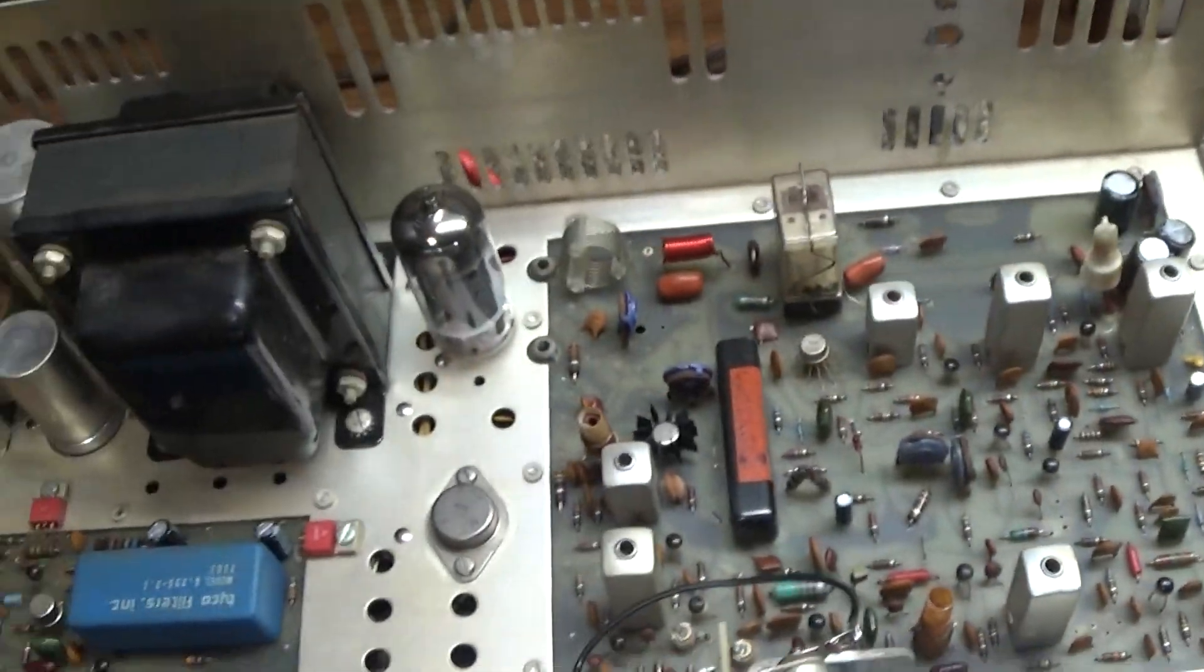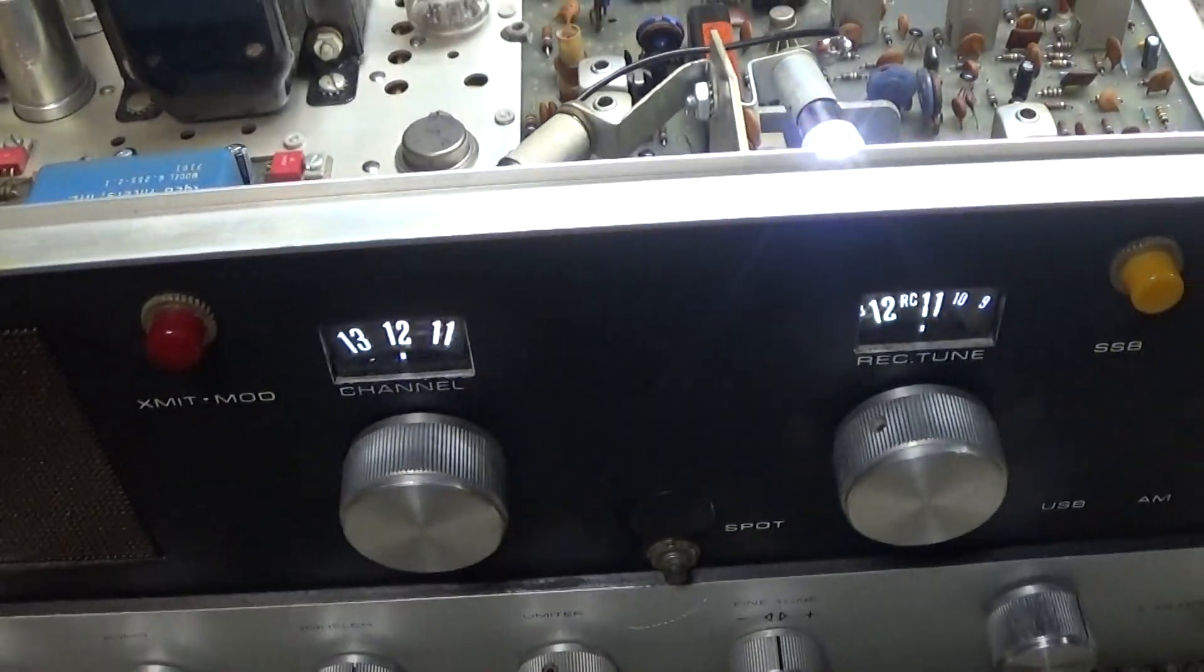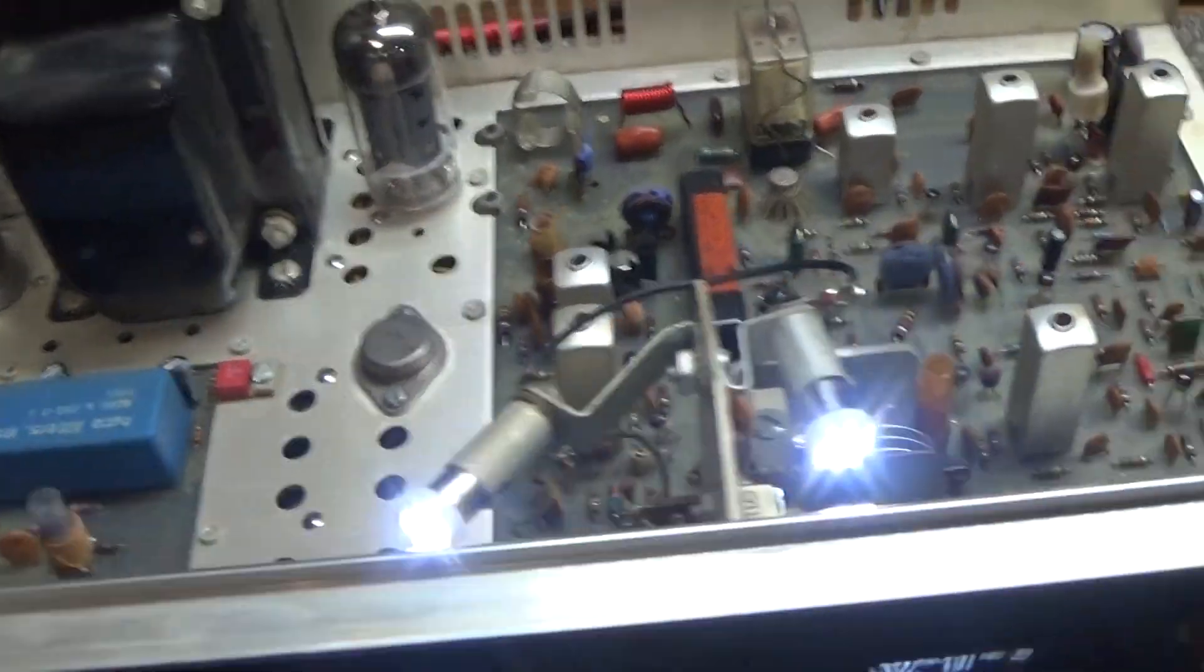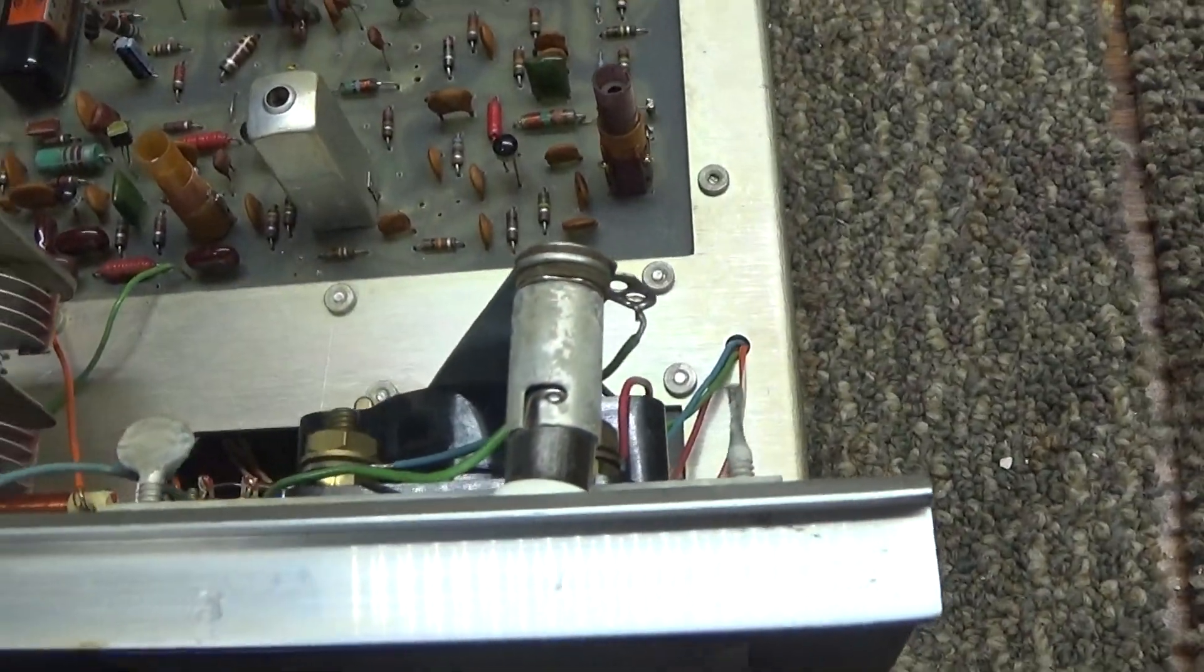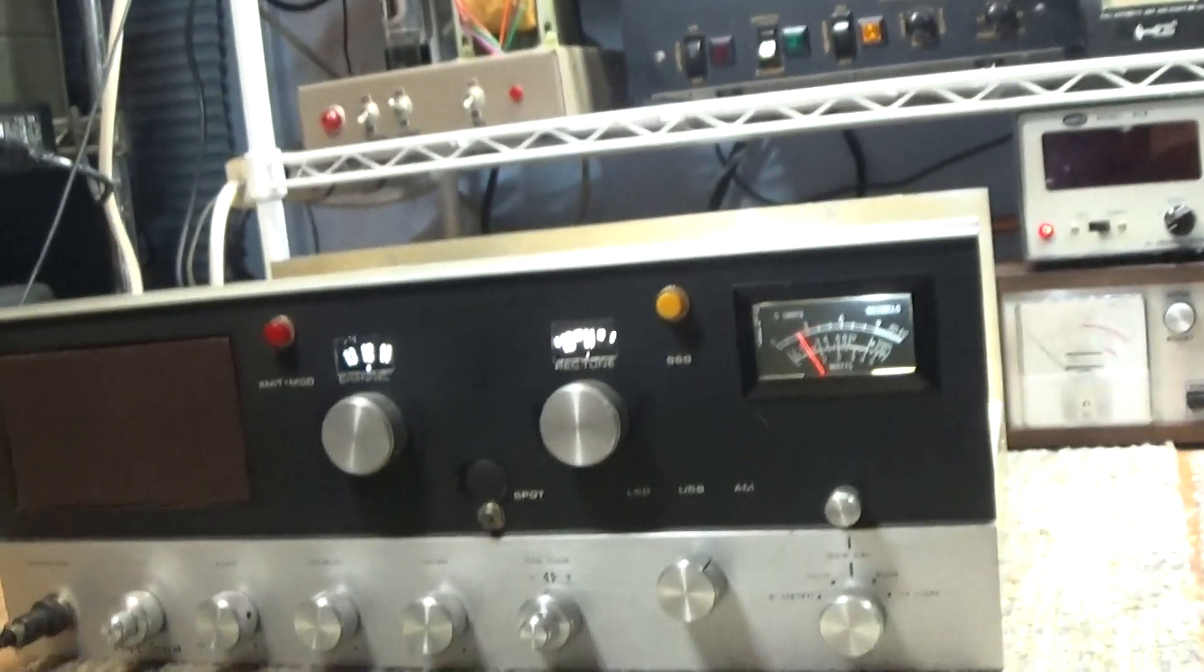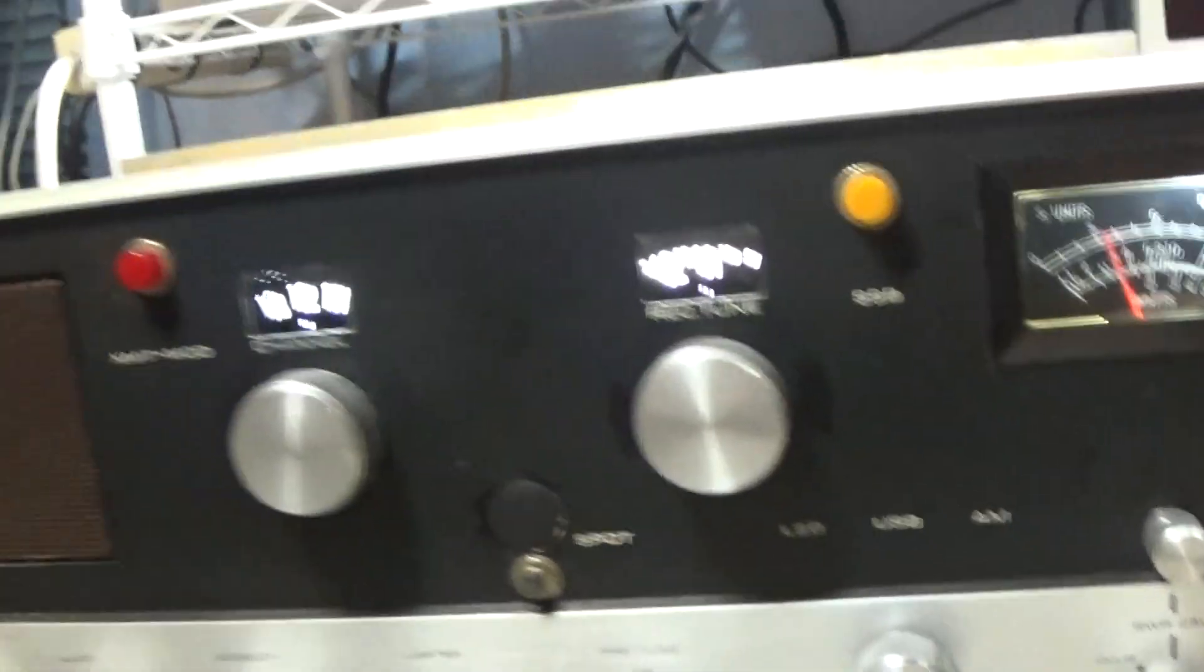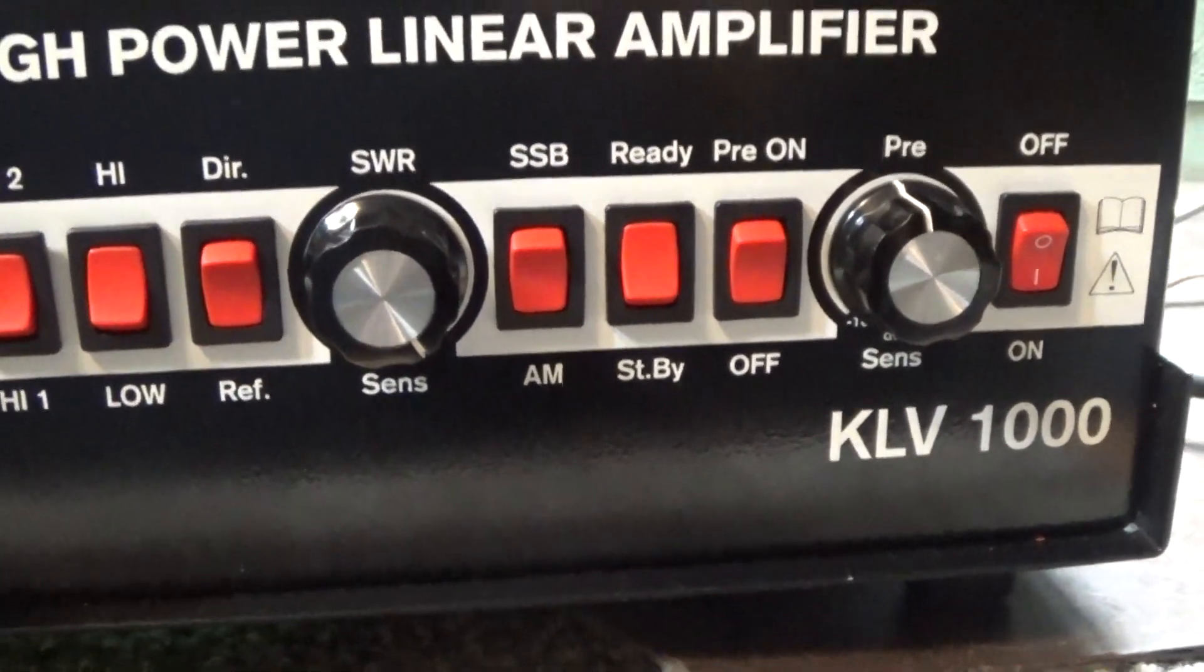Over here is a nice clean Tram Titan 4 that I keep on the bench that I usually use to drive my radios with. One of the light bulbs went out so I just replaced it with a very bright LED and I think it looks kind of nice that way, it's really lit up. That's the old trusty Tram Titan 4 going into the RMI Italy KLV 1000 amp.